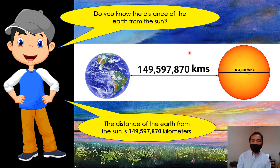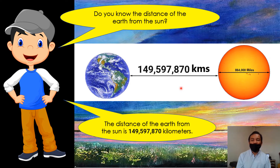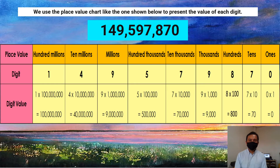Using these numbers, we will know what is the place value and the digit value. We use the place value chart like the one shown below to present the value of each digit.